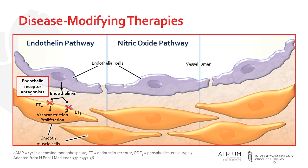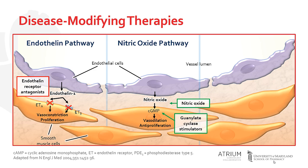In the second pathway, nitric oxide acts as one of the body's physiologic vasodilators and it also has anti-proliferative effects. It acts via increased cyclic GMP concentrations. Exogenous nitric oxide may be administered to enhance this pathway, but this is primarily reserved for acutely ill patients. The guanylate cyclase stimulator, riociguat, may also be used to increase cyclic GMP production to enhance this pathway. Finally, cyclic GMP is broken down by phosphodiesterase type 5, so PDE5 inhibitors, such as sildenafil, can be used to prevent cyclic GMP degradation.